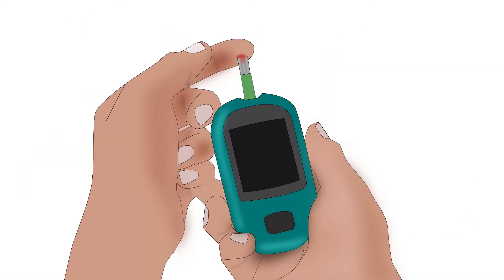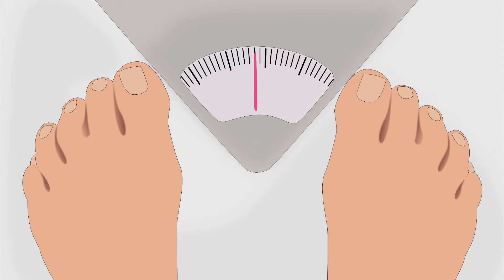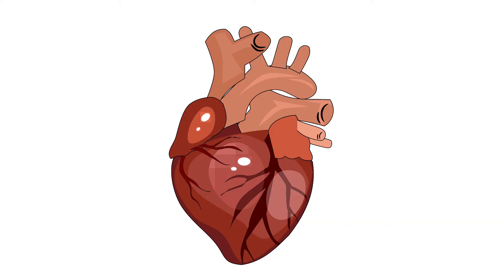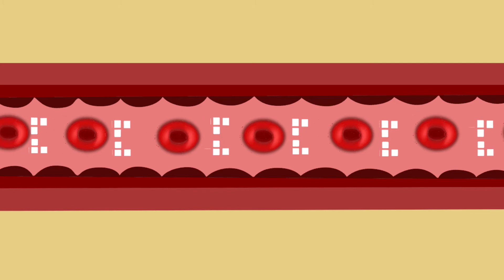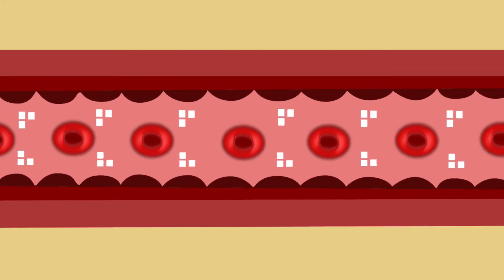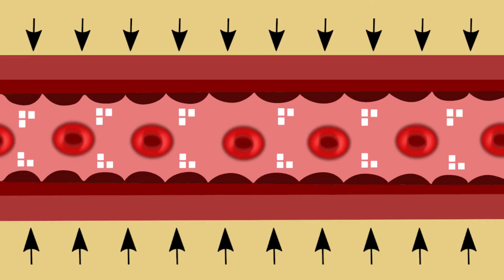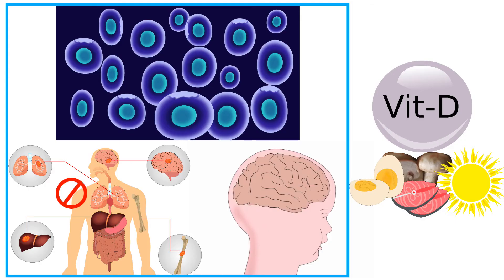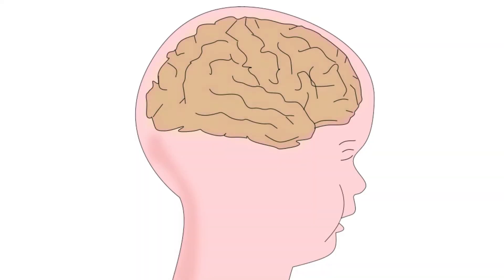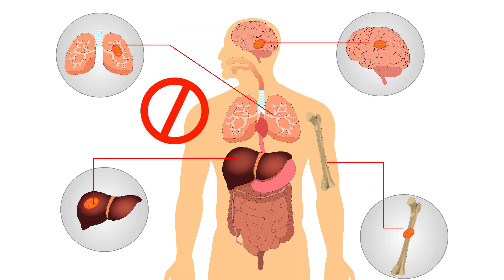Vitamin D is found to improve insulin sensitivity. Therefore, it helps in managing diabetes, blood pressure, and body weight. It also maintains good heart health by helping in the relaxation of blood vessels in the heart. For many other functions in the body, vitamin D is essential — for example, cell division, brain development, and prevention of cancer.